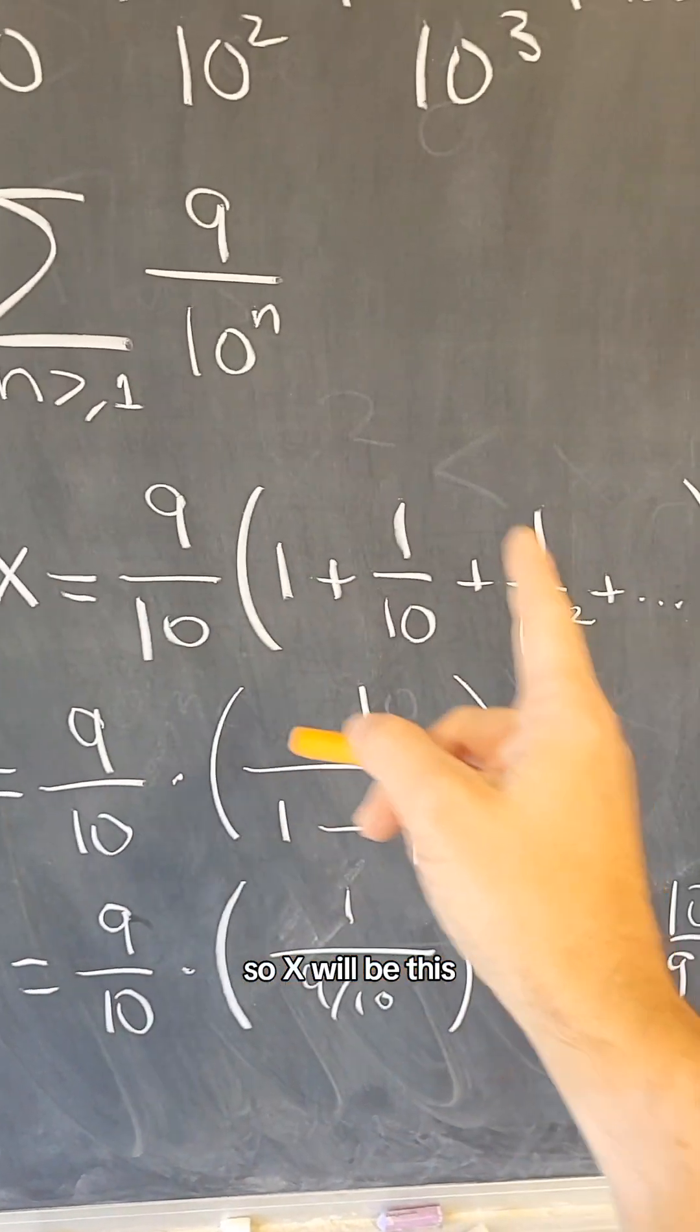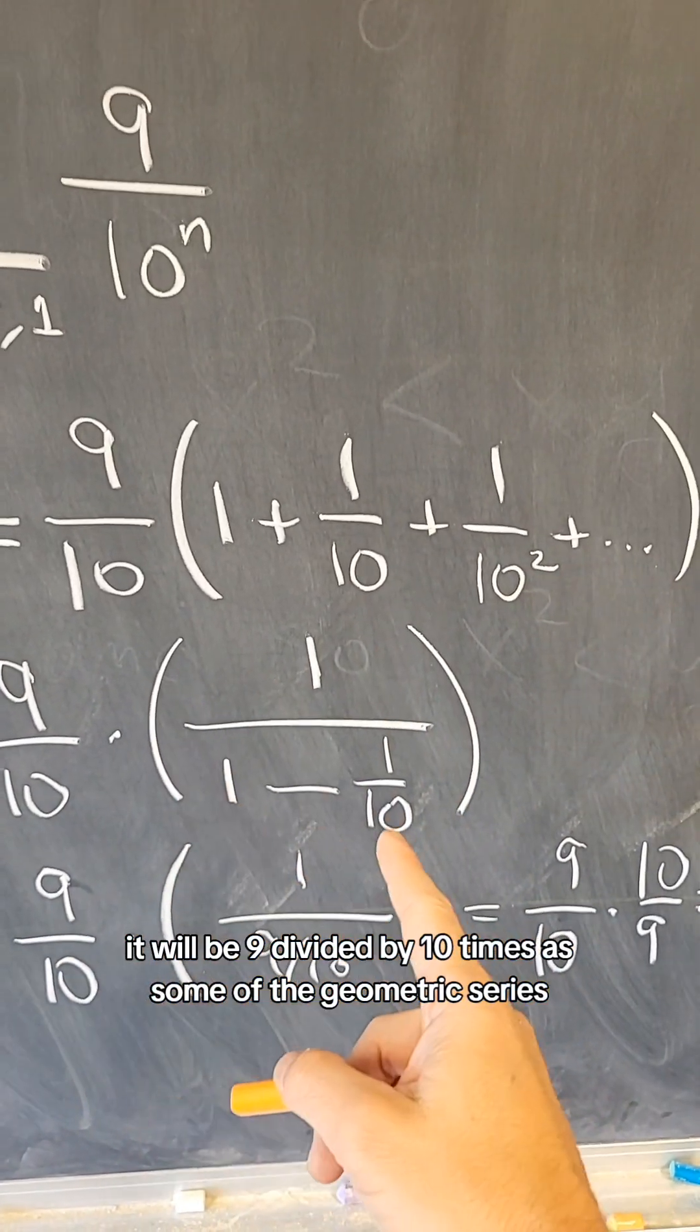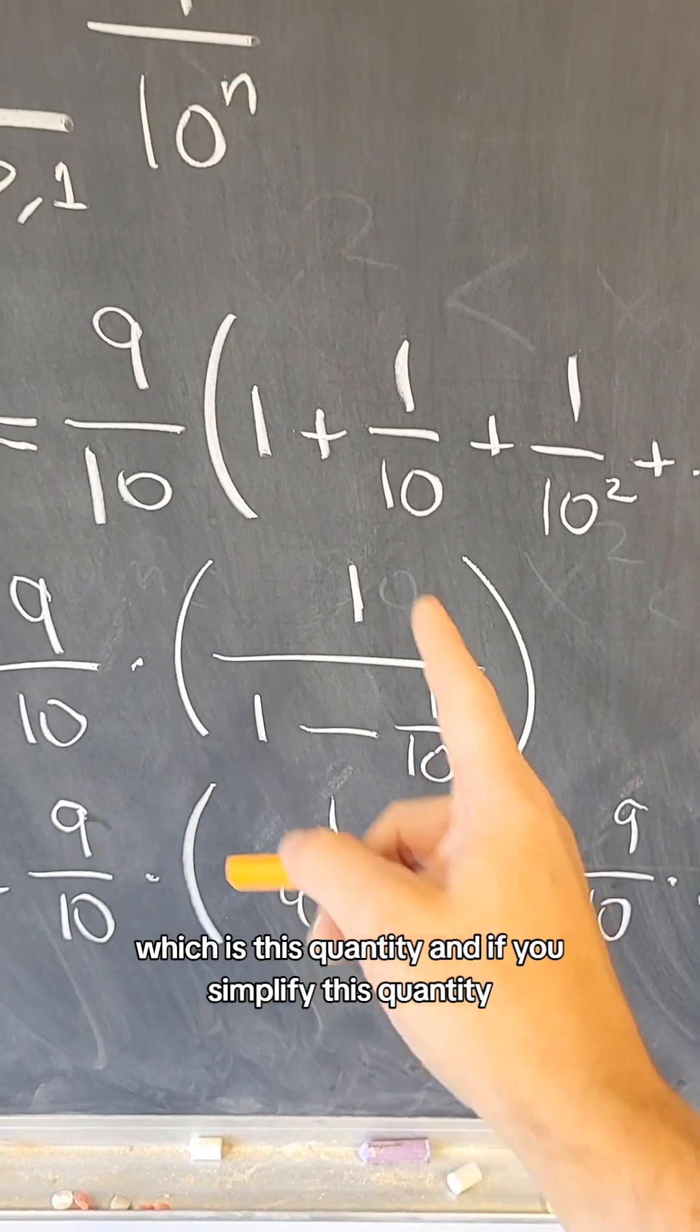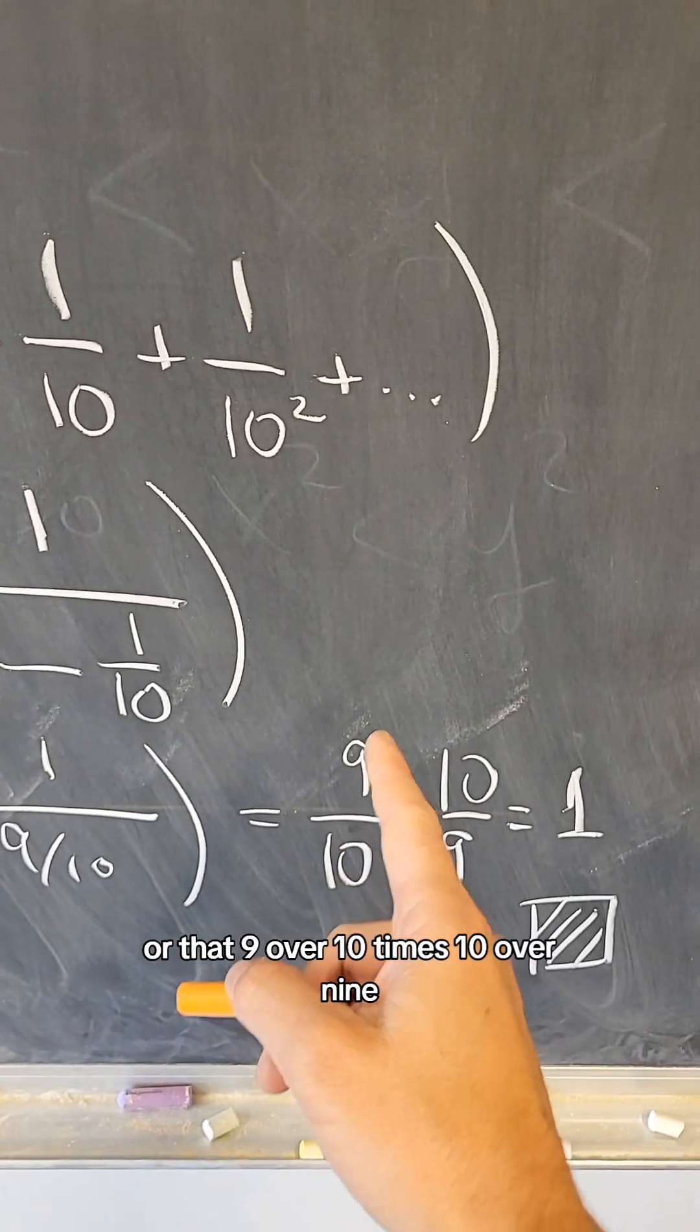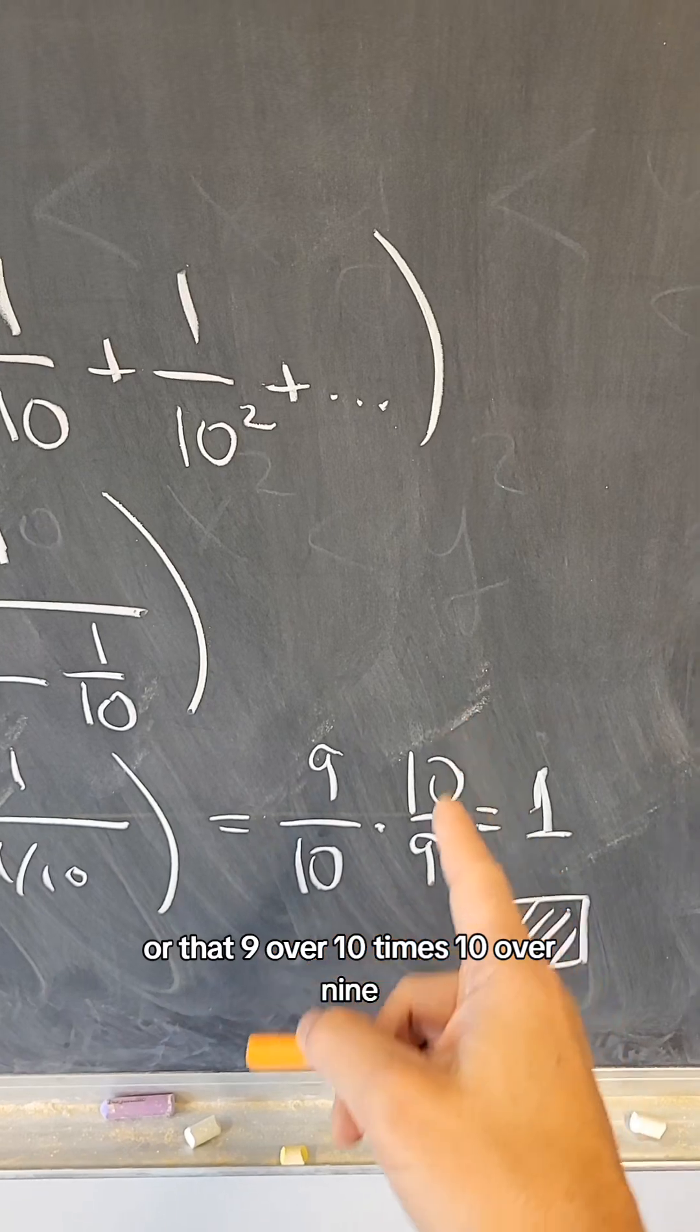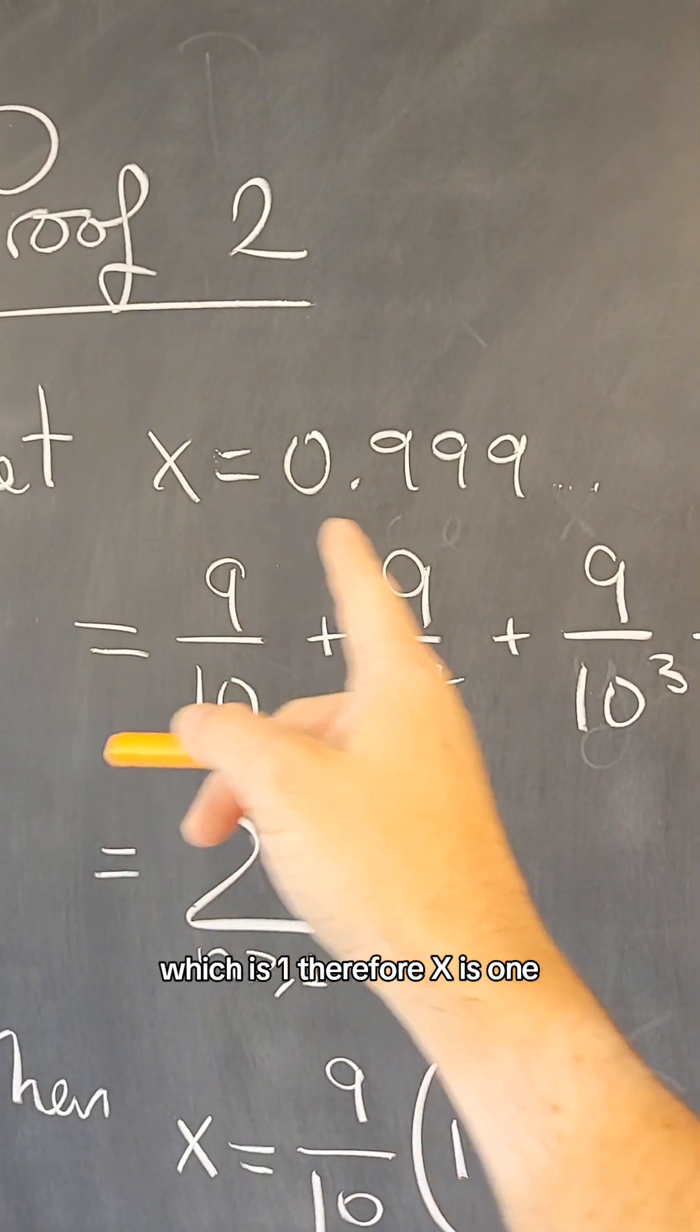So x will be 9 divided by 10 times the sum of the geometric series, which is this quantity. If you simplify this quantity, this is 1 over 9 over 10, or 9 over 10 times 10 over 9, which is 1. Therefore, x is 1.